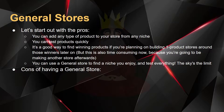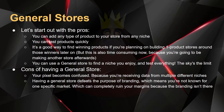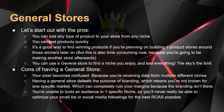Now let's go over some of the cons of having a general store. Your pixel becomes confused because you're receiving data from multiple different niches. Basically it holds data for your store and it can't build data in one category if you have products in several different niches. So having a general store kind of defeats the purpose of branding, which means you're not known for one specific market. You're unable to build an audience in one specific niche, so you never are really able to optimize your email list either, which is a huge downfall of general stores.